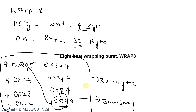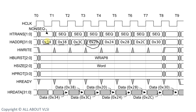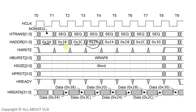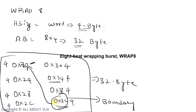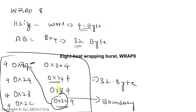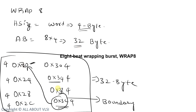In this example the initial address is 0x34. They start from 0x34, next is 0x38, then 0x3C, and after that the next address is 0x20 — wrapping back to the first address of this boundary. Then they continue to 0x24, 0x28, 0x2C, 0x30, and so on. This is how we calculate the address boundary in the case of a WRAP8 burst.